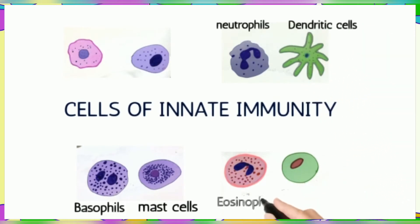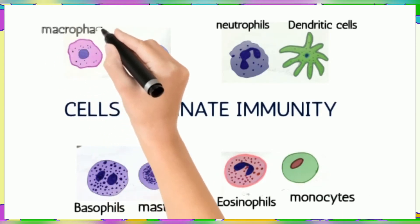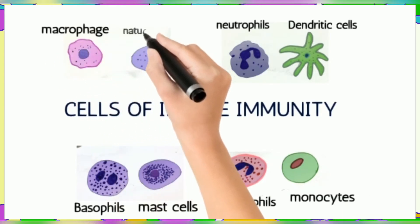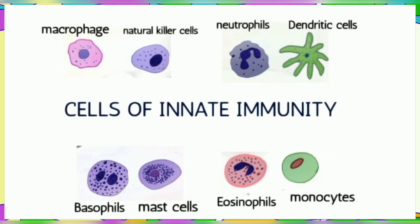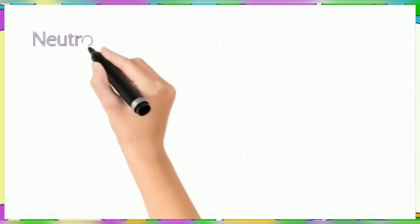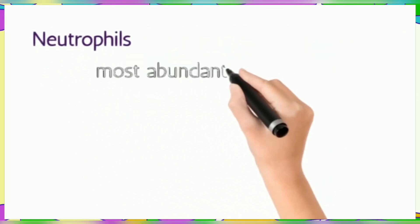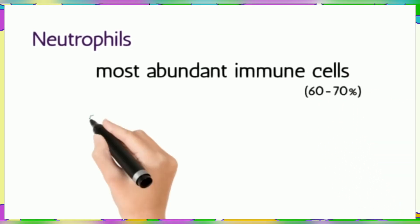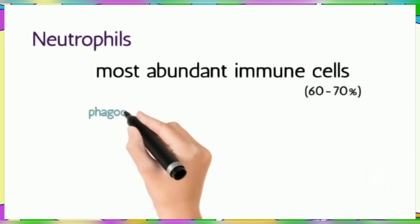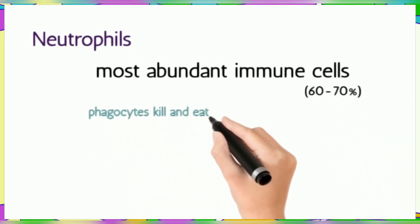When a pathogen crosses the physical and physiological barriers and enters the body, the cells of innate immunity respond to protect us. Neutrophils are the most important and abundant immune cells among the leukocytes.